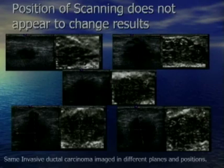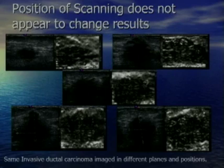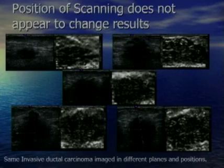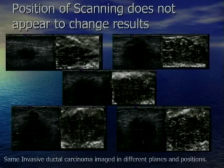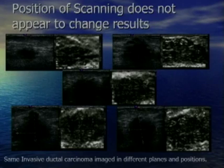When we started elasticity imaging, we were concerned about whether it matters where on the lesion you do the examination. This is a case of invasive ductal cancer where we scanned the lesion in multiple different planes and directions — and we get the same results no matter where we are scanning.